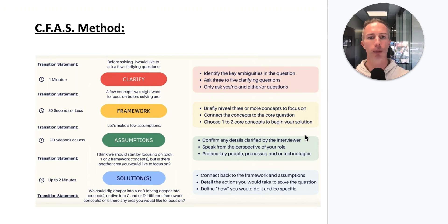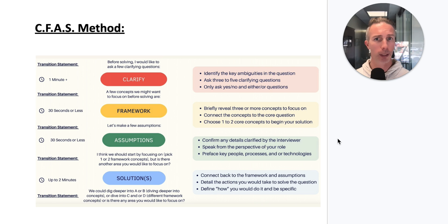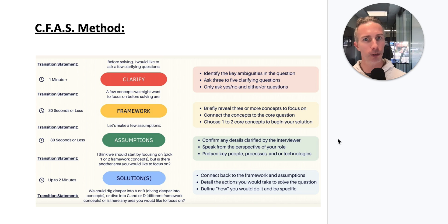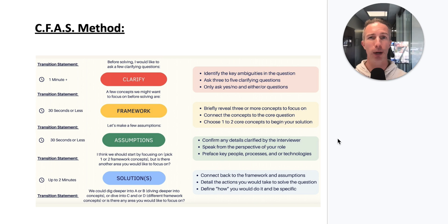Then we get to our method. I recommend that anybody answering any hypothetical question uses the CFAST method. We're going to get a little clarification, then provide our framework — that's our outline. Then we'll make some role-specific assumptions, which starts to get the interviewer to picture us in the role. Then we put it all together and come up with ideally multiple solutions to provide a really strong overall answer.